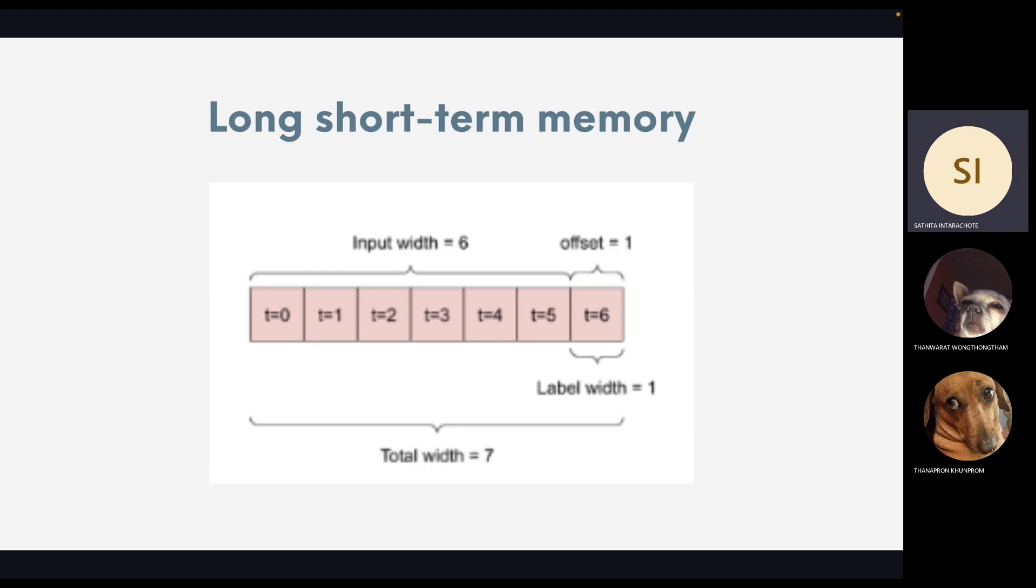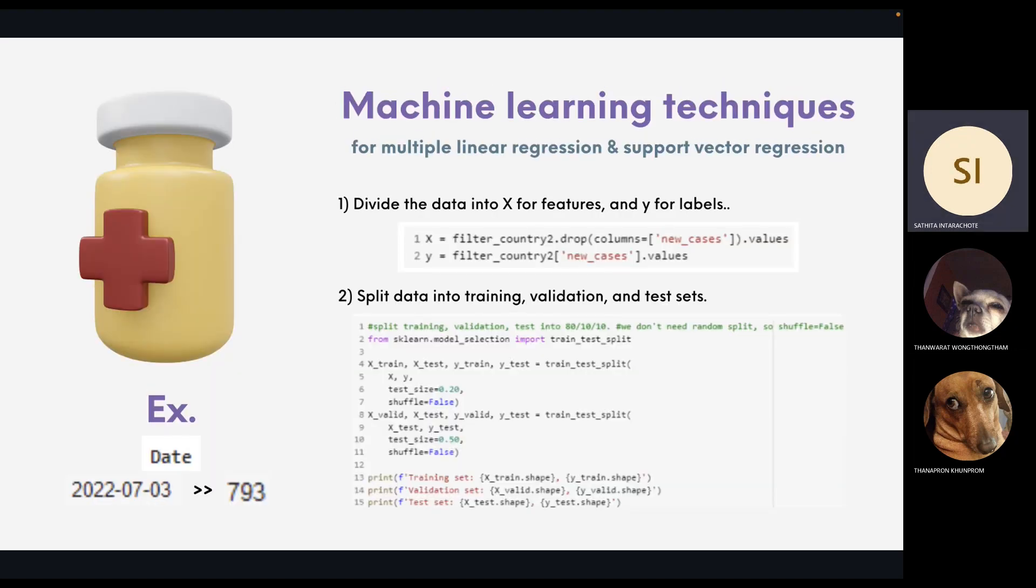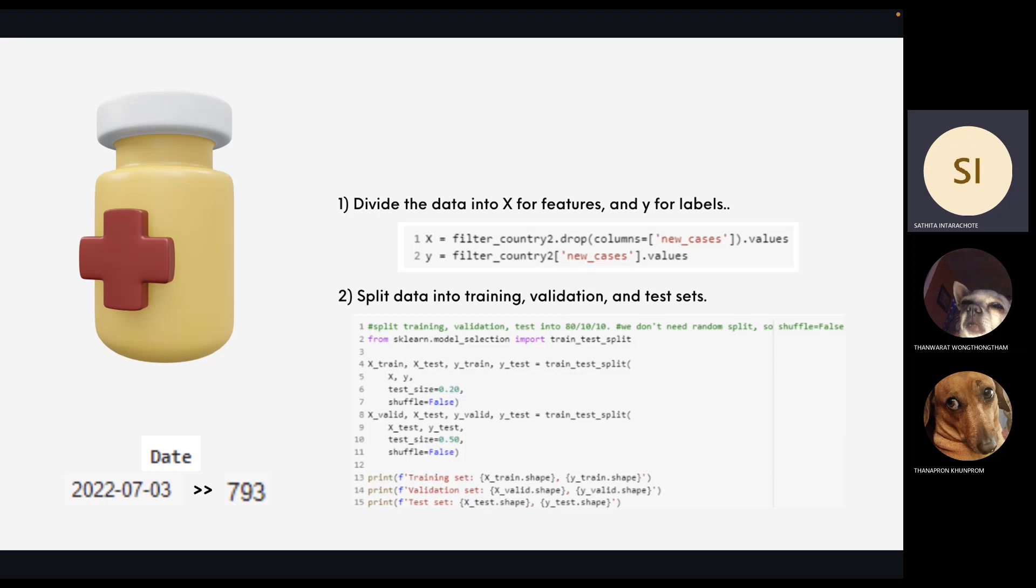For example, an LSTM model that makes a prediction one hour into the future, given six hours of history, would need a window like this. And the next part is the techniques for model prediction. For first two models, which are multiple linear regression and support vector regression, they have a similar process, but we will replace the date column with a new column that will be presented in integer numbers. The first step is divide the data into X for features and Y for labels, and split data into training, validation, and test sets. Instead of splitting the data randomly, we change to split data in sequential order because our data is related to time series.